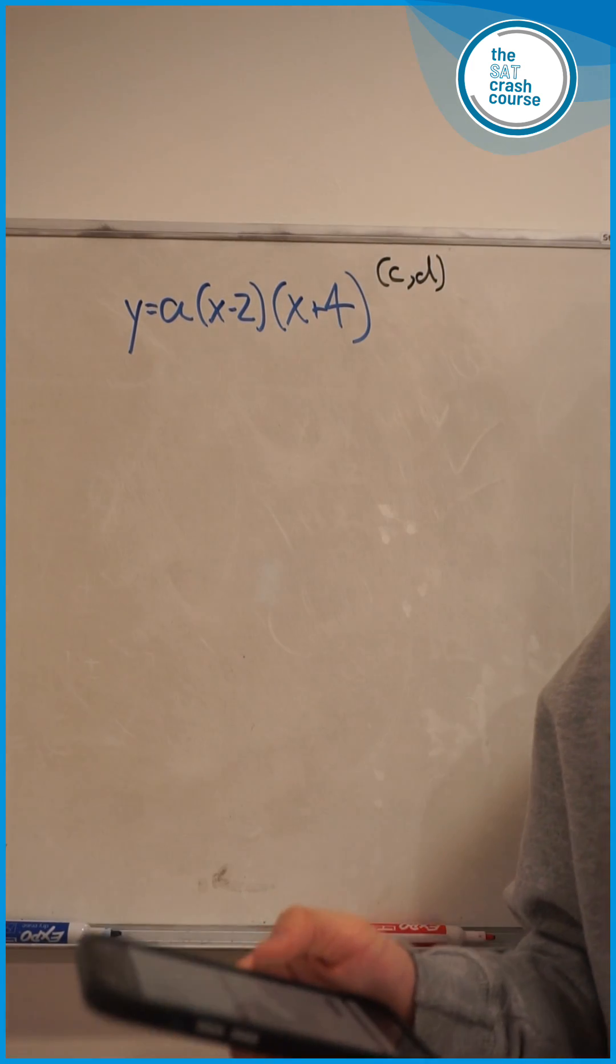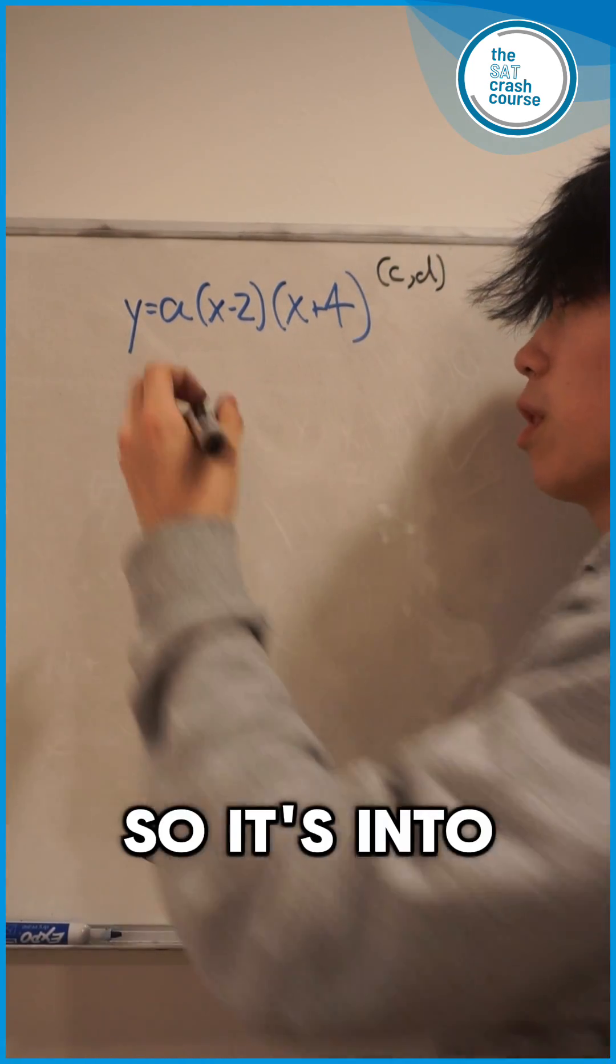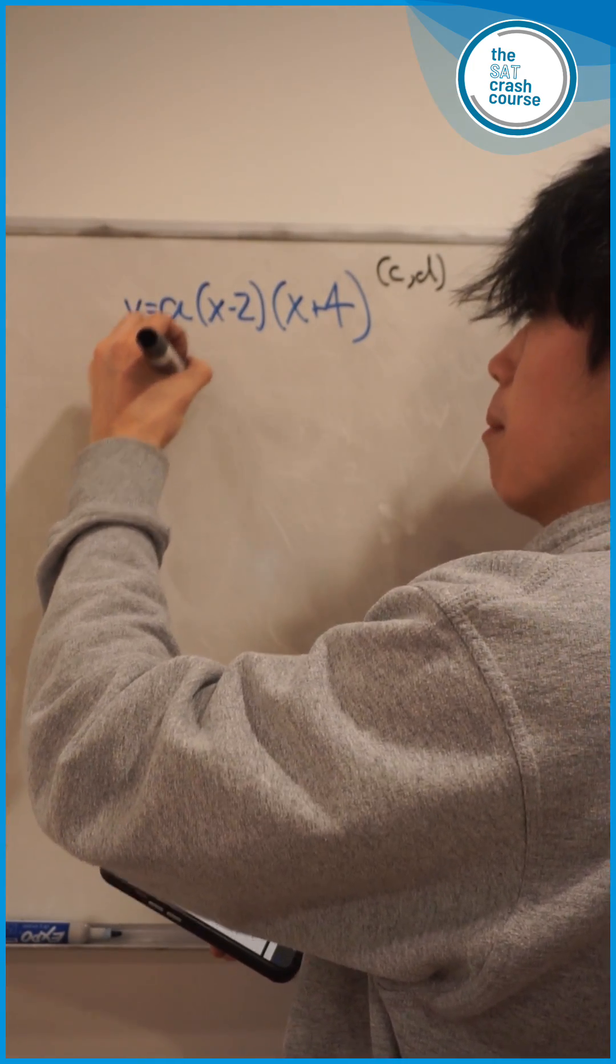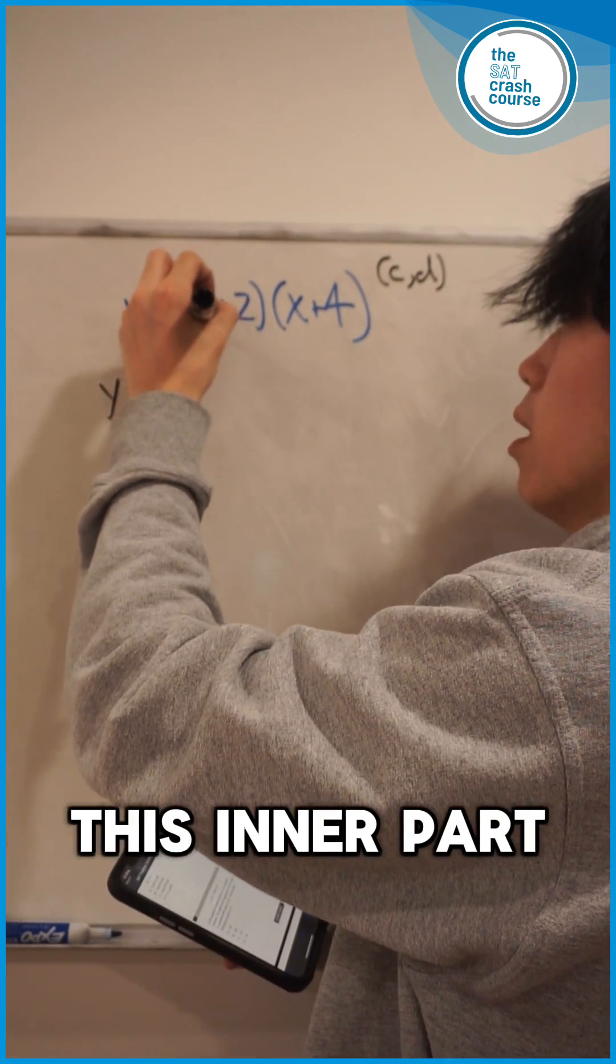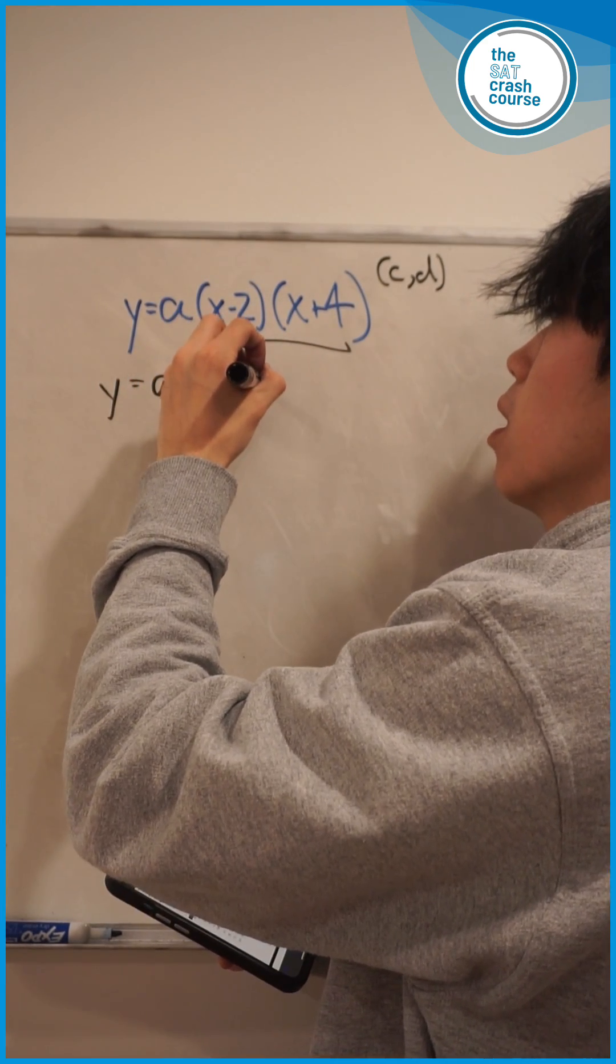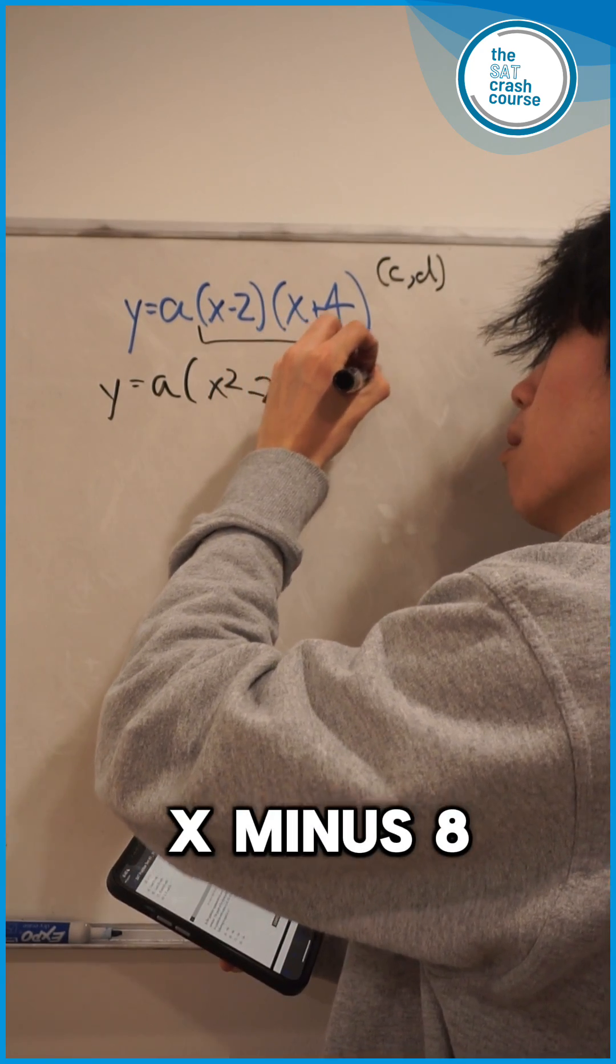Let's first begin by putting this parabola into its standard expanded form. We can do this by foiling this inner part to get x squared minus 2x plus 4x minus 8.